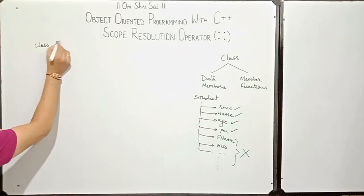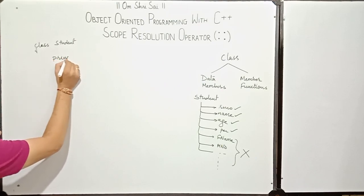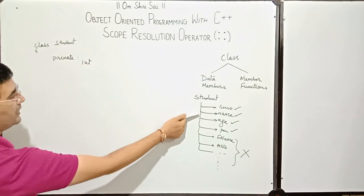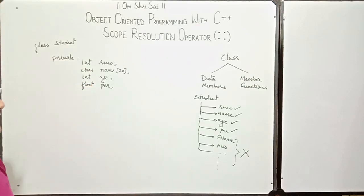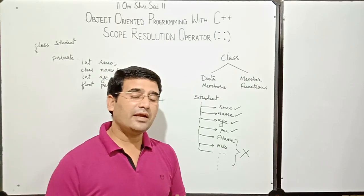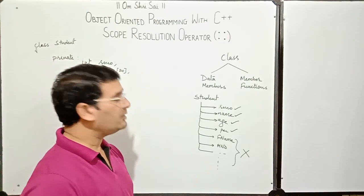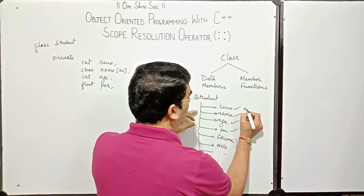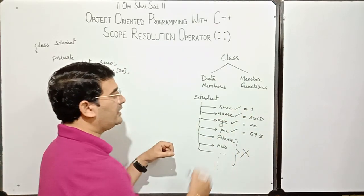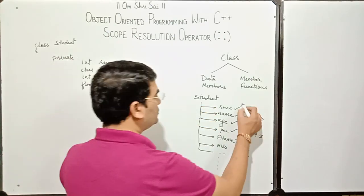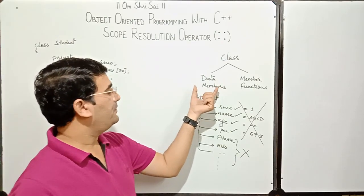Let us define the class. Data members will be defined in the private visibility mode. I will open the private visibility mode and define the important data members: role number, name, age, and percentage. I have rejected father's name, mobile number, and other properties. This is the first part of abstraction with respect to data members. The second half says we need not include the background details of the properties — meaning we will not include the values of these data members while defining the class. We have implemented abstraction for the data members.